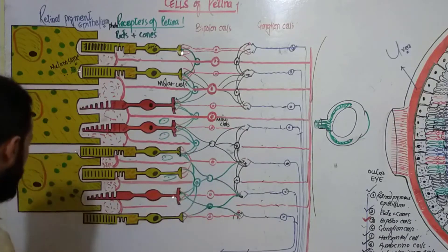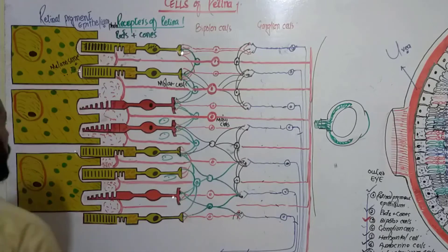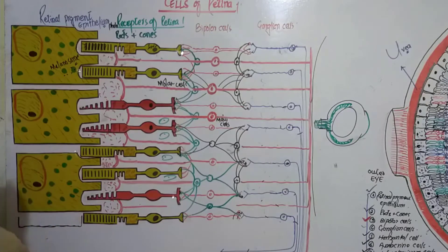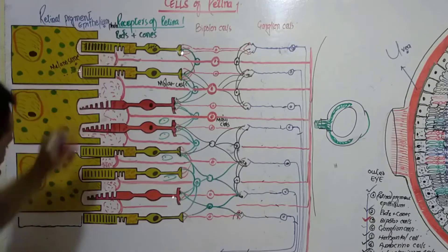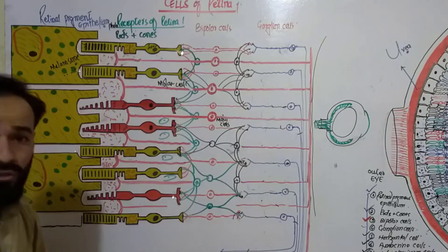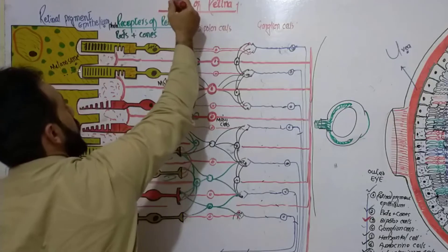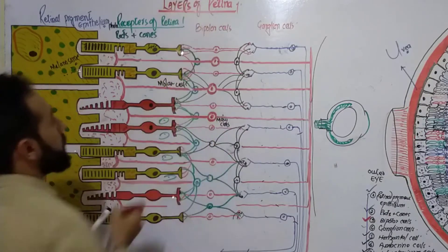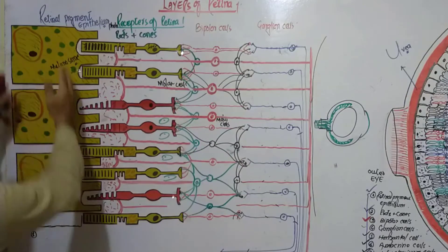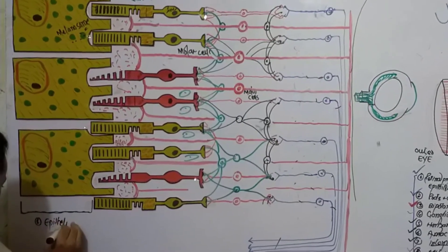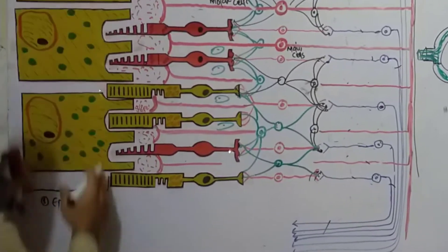First of all, here is a layer — this layer is your epithelial layer. These are the epithelial cells, so this is the retinal pigment epithelium. The first layer of the retina, as we are discussing the layers of the retina, is the epithelial layer — the retinal pigment epithelium.